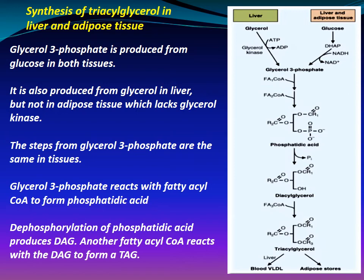Synthesis of triacylglycerol in liver and adipose tissue: glycerol-3-phosphate is produced from glucose in both tissues. It is also produced from glycerol in the liver, but not in adipose tissue, which lacks glycerol kinase. Glycerol-3-phosphate reacts with fatty acyl-CoA to form phosphatidic acid. Dephosphorylation of phosphatidic acid produces diacylglycerol. Another fatty acyl-CoA then reacts with diacylglycerol to form triacylglycerol.